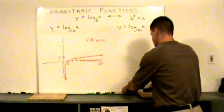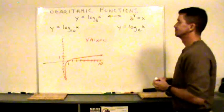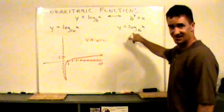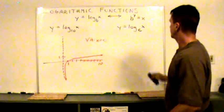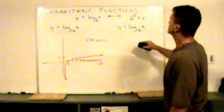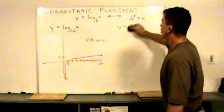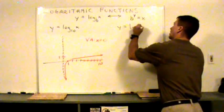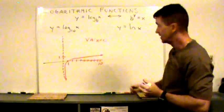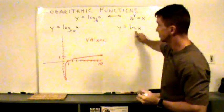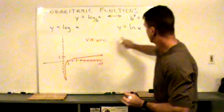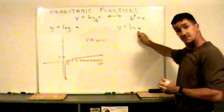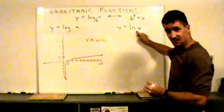Now log base e of x. First of all, this isn't written this way. This is the natural base. So this gets a special notation. This is natural log of x. So log base e of x is written as the natural log of x, ln of x. But the base here is an e. So if this is invisible right here on a log, it's a 10. If there's an ln of x, there's a base e here. It's just invisible.